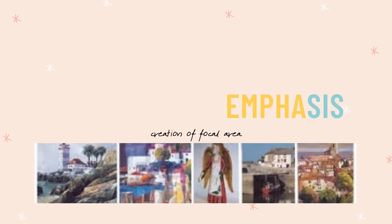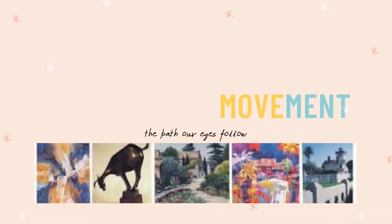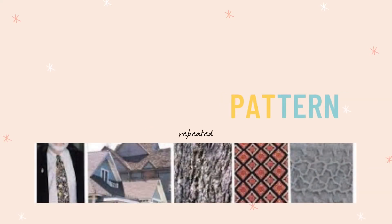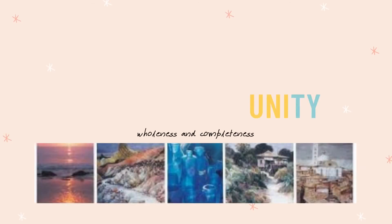Emphasis is a principle of art which refers to the use of visual elements to draw attention to a certain area, usually a focal point in an artwork. Movement is the path our eyes follow when we look at a work of art, and it is generally very important to keep a viewer's eyes engaged in the work. Without movement, artwork becomes stagnant. Pattern is an element or set of elements that is repeated in a piece of work or an associated set of works. Unity is also called harmony. It is an important principle of design that gives the artwork a sense of cohesion or coherence. It is the wholeness or completeness of a picture.